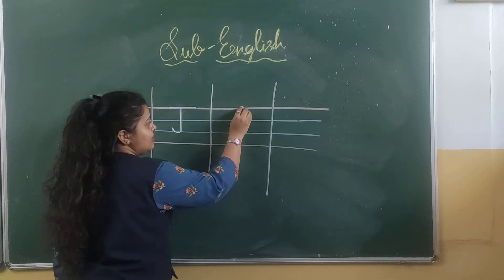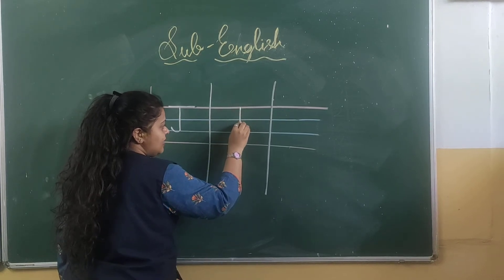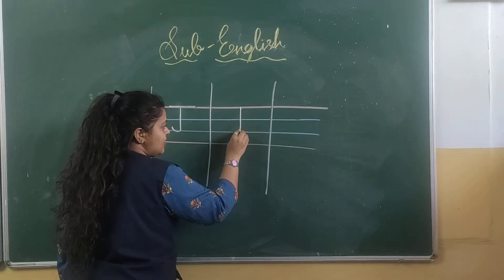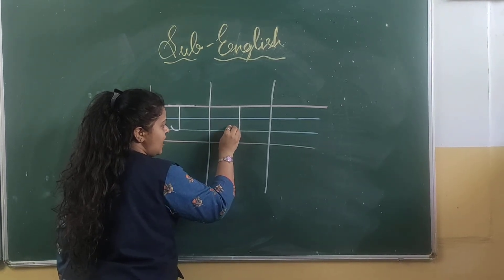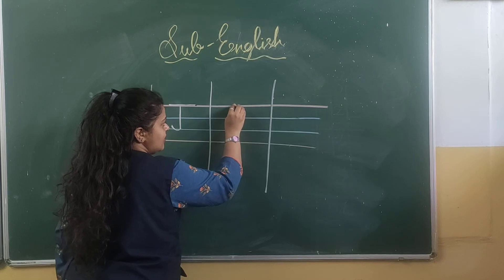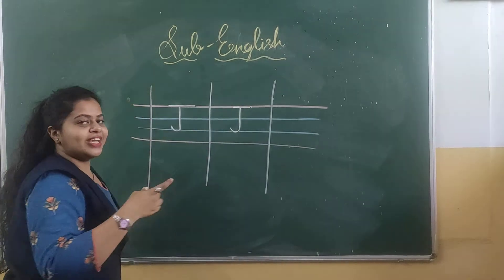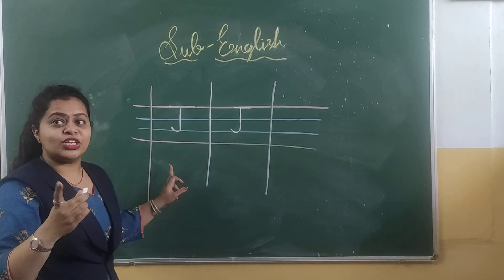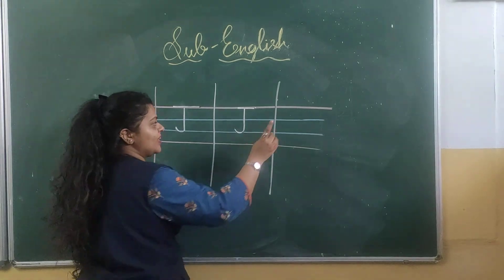Once again: standing line, take a slight curve towards your left hand side, and a sleeping line. This is how you need to write the letter J.